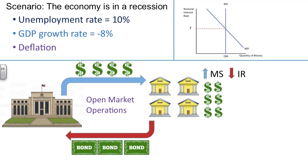Now let's look at the money market graph at the top right of the screen. With an increase in the money supply due to open market operations — where the Federal Reserve is buying bonds — we'll see a shift to the right of the money supply curve. Notice the impact on the equilibrium nominal interest rate as the money supply curve shifts from MS to MS1, an indication of an increase in the money supply. Interest rates will go down as we can see here — they slide along the money demand curve.